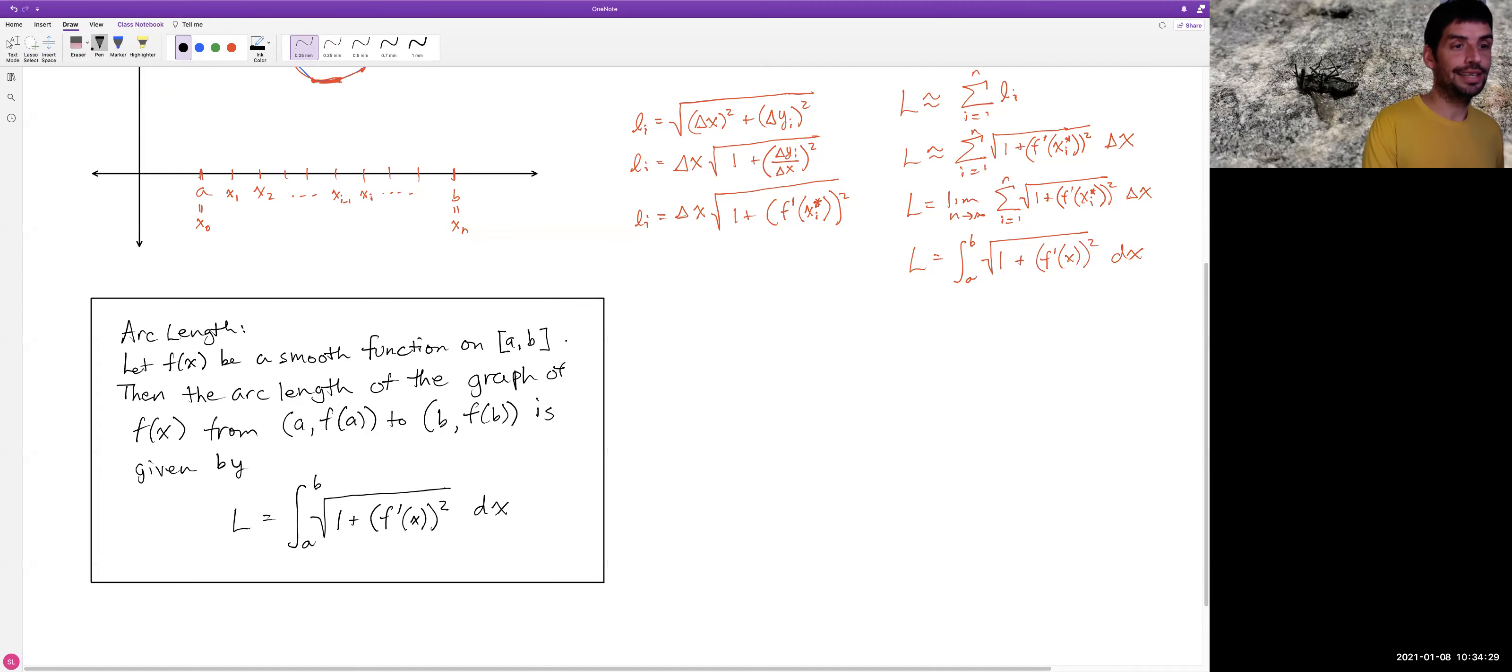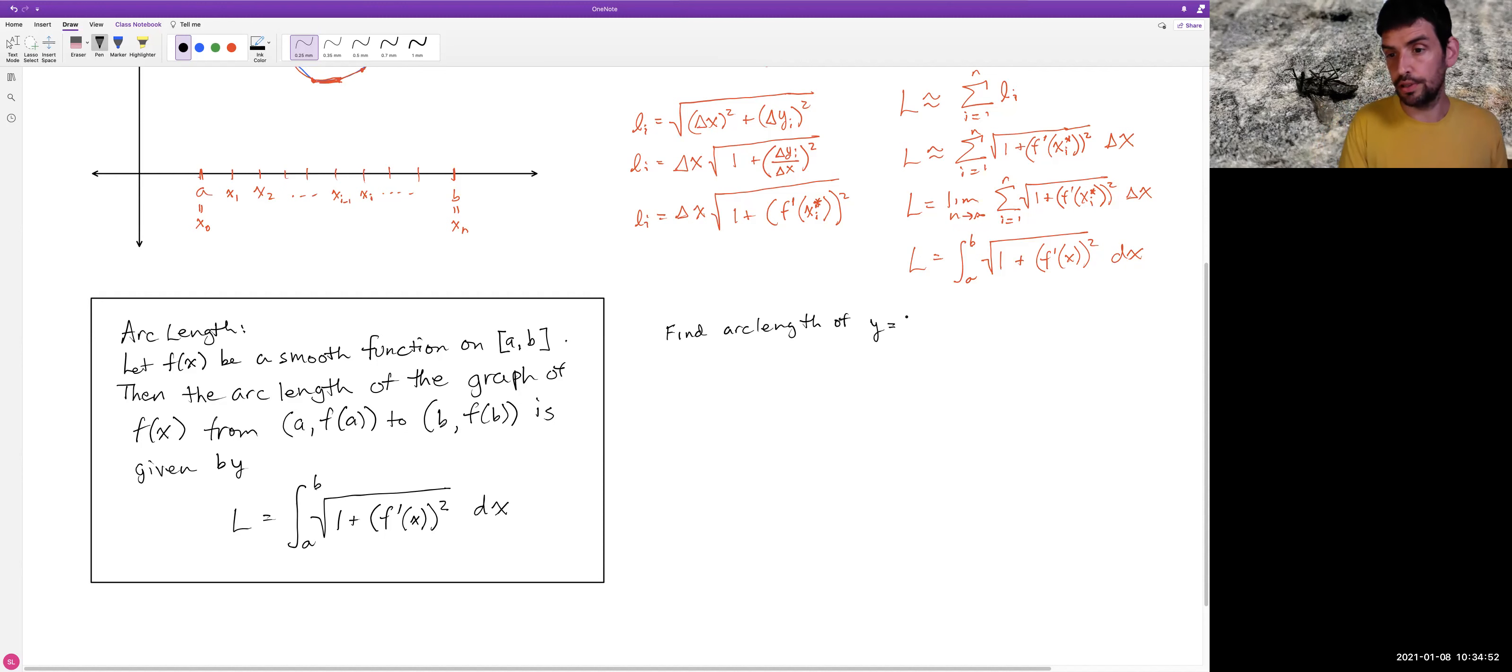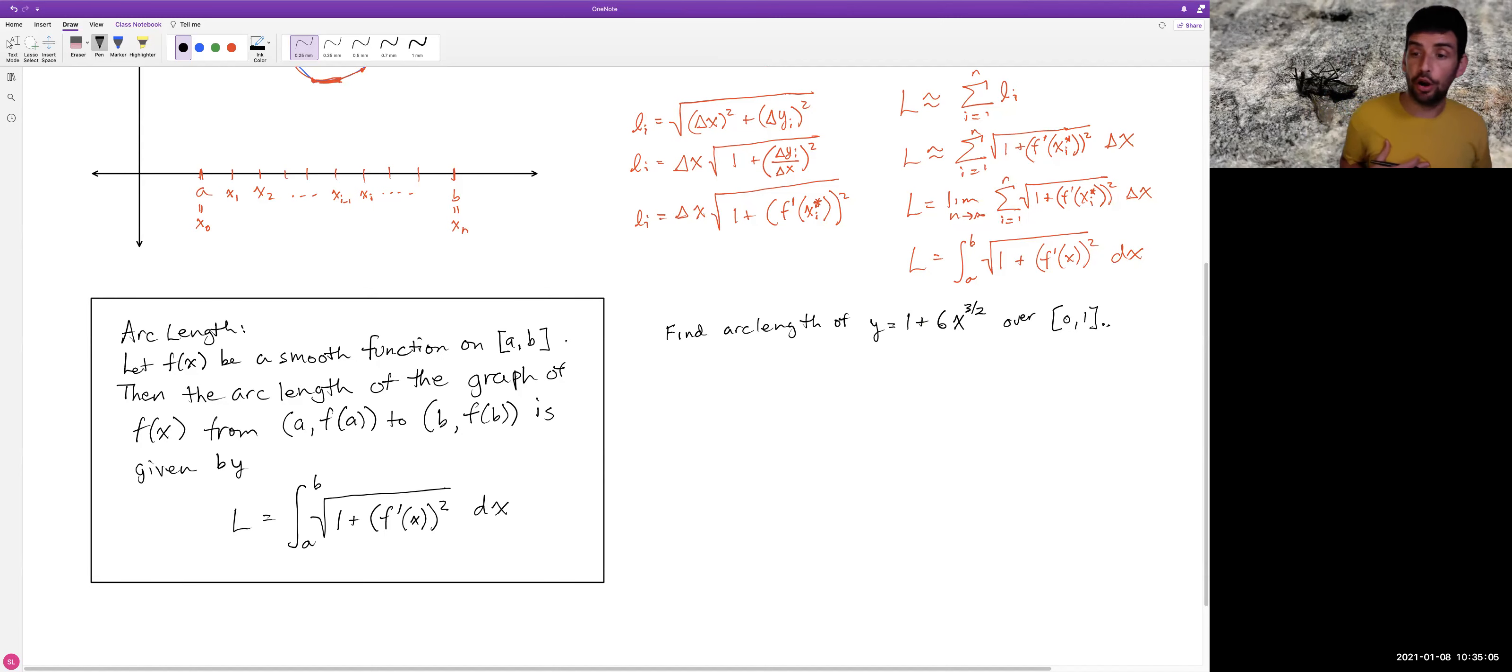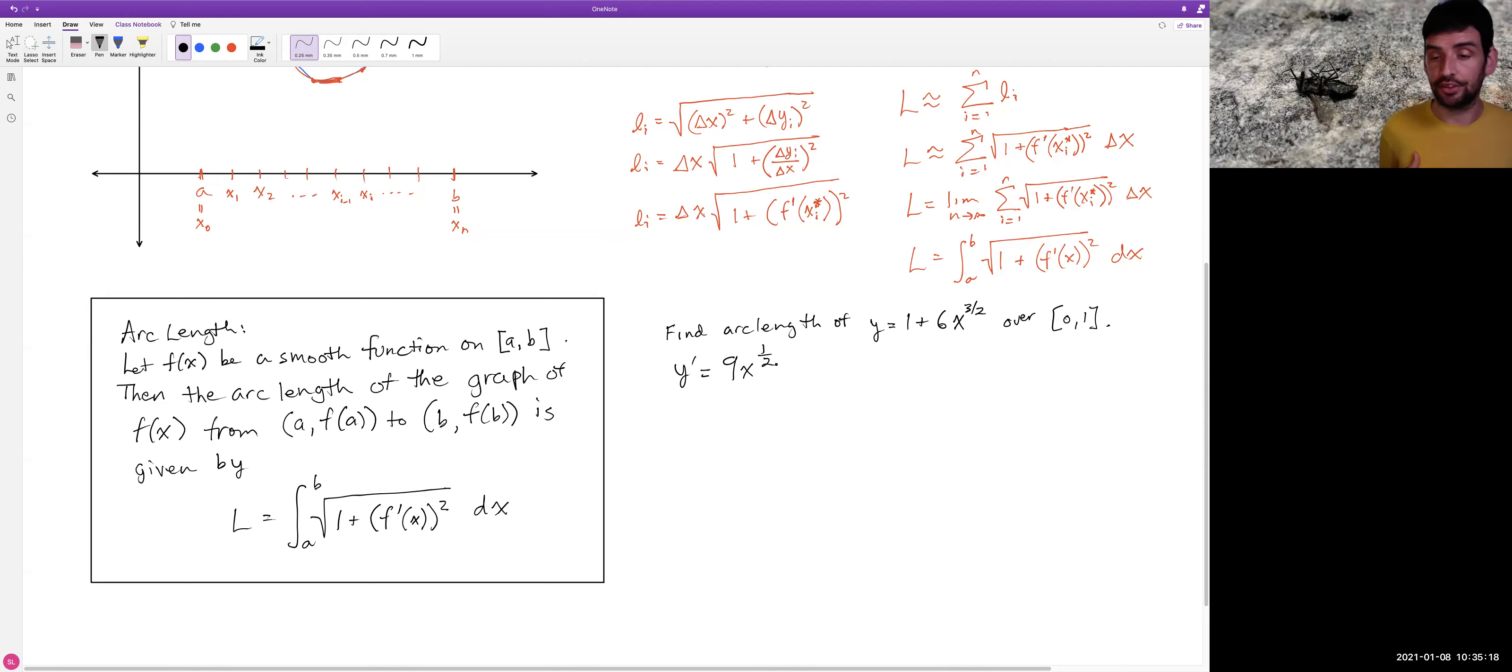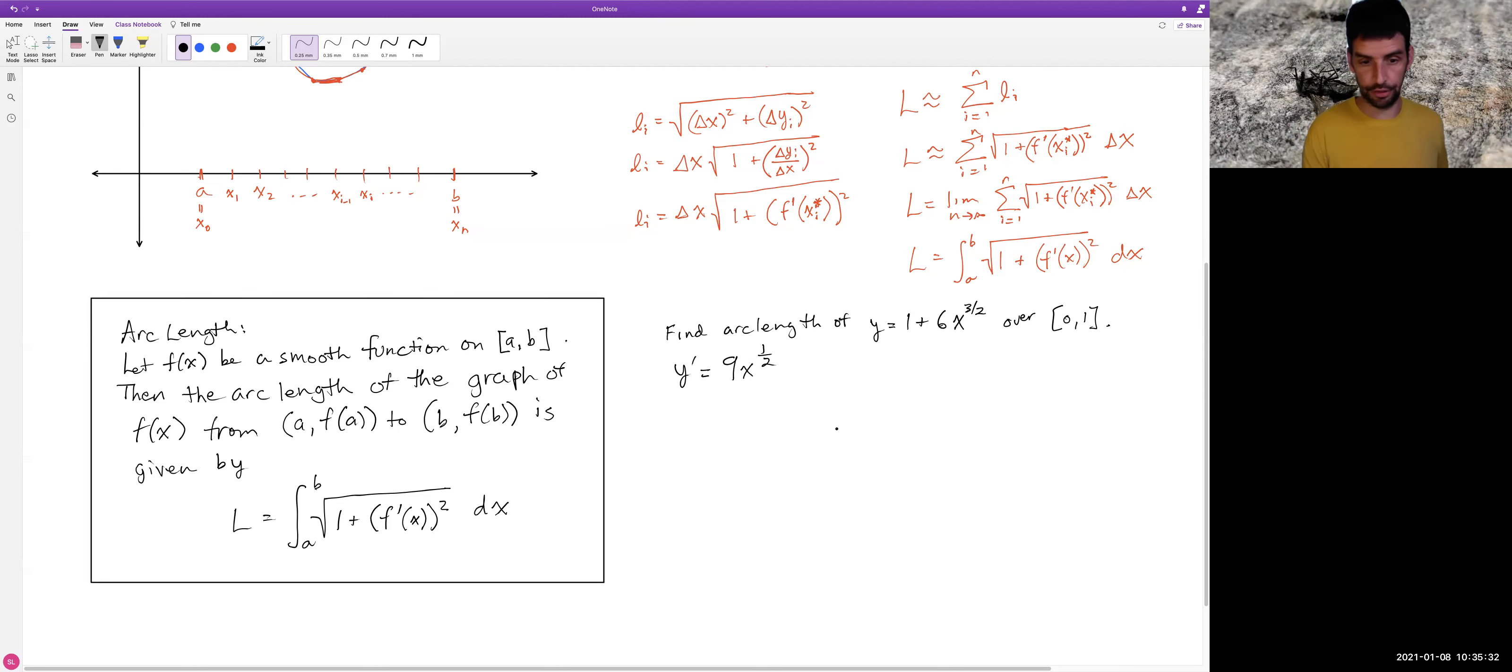Okay, so let's do an example now of using this. So my first, we're going to do two examples. First one, I think is pretty straightforward. We'll say, let's find the arc length of y equals 1 plus 6x to the three halves over the interval 0 to 1. So first of all, we need to know that this function is smooth. Let's look at its derivative, y prime is going to be 9x to the one half, and this is certainly defined for all values of x in this interval, and it's continuous. So this is one of our standard functions. We know that this is continuous over this interval, so we're good there.